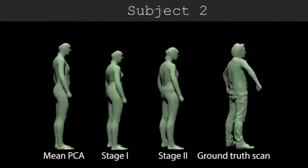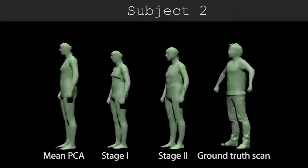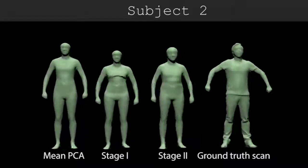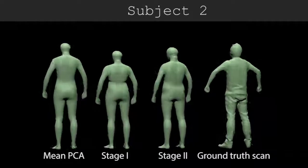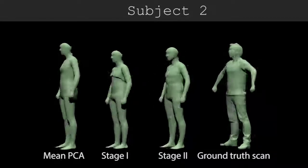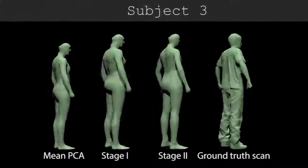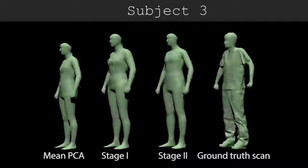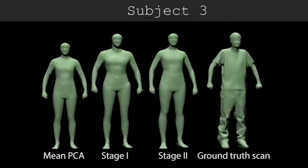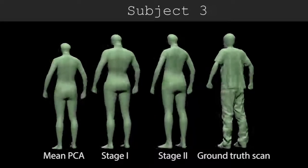Here we show the estimated mesh for another subject captured in the same studio. Despite being shorter than the average shape, his body shape is estimated well. The tall and slim subject 3 was reconstructed from only three cameras in an outdoor setting and is also estimated well.